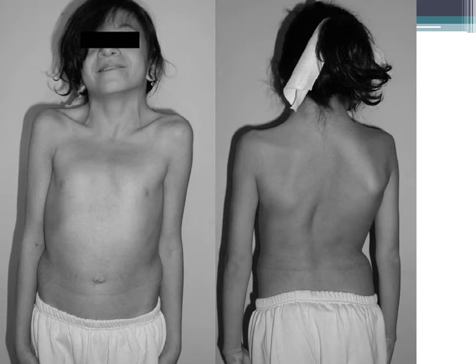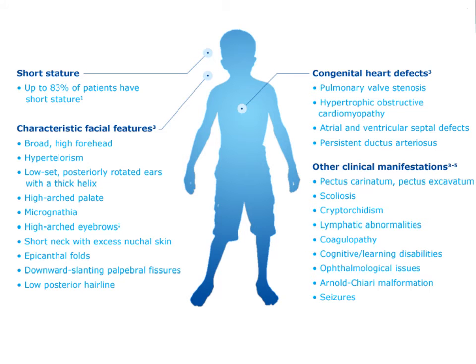Typical features of Noonan syndrome include wide-spaced nipples, a shield-shaped chest, webbed neck, low posterior hairline, and scoliosis. Up to 83% of patients have short stature. Congenital heart diseases typically present in Noonan syndrome include pulmonary stenosis and hypertrophic cardiomyopathy.